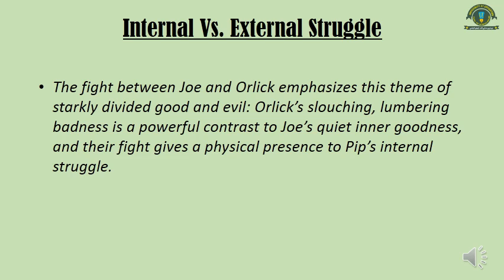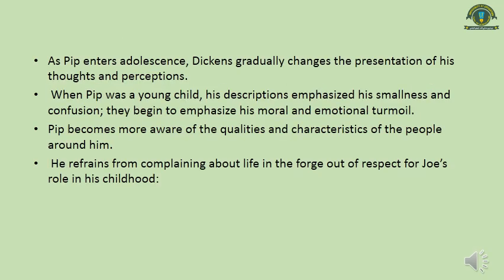The fight between Joe and Orlick emphasizes the stark divide between good and evil. Orlick's slouching, lumbering badness is a powerful contrast to Joe's quiet inner goodness, and their fight gives physical presence to Pip's internal struggle. As Pip enters adolescence, Dickens gradually changes the presentation of his thoughts and perceptions. When Pip was a young child, his descriptions emphasized his smallness and confusion. They begin to emphasize his moral and emotional turmoil. Pip becomes more aware of the qualities and character of the people around him, and he refrains from complaining about life in the forge out of respect for Joe's role in his childhood.